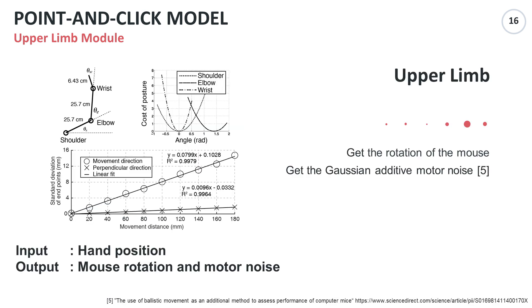The last module is the upper limb module. The upper limb module simulates the rotation of the mouse by assuming the arm is a two-dimensional three-degree-of-freedom manipulator with three revolute joints, and also simulates the Gaussian additive motor noise proportional to the hand movement speed.